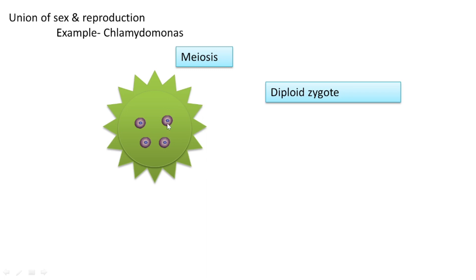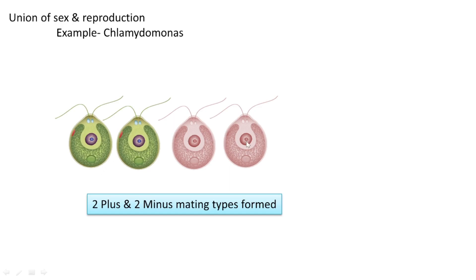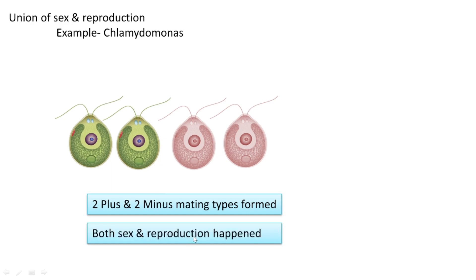This diploid nucleus then undergoes meiosis to form four haploid nuclei. After meiosis, four mating types are generated — among them two will be plus and two will be minus. So here we found that both sex and reproduction occur in Chlamydomonas.